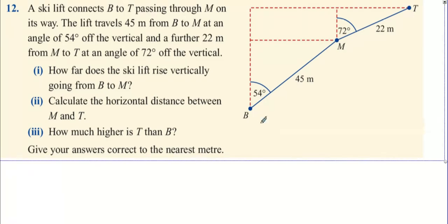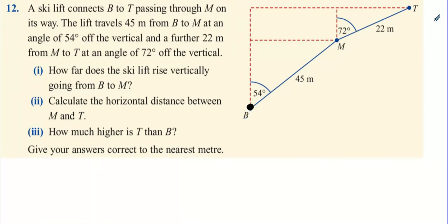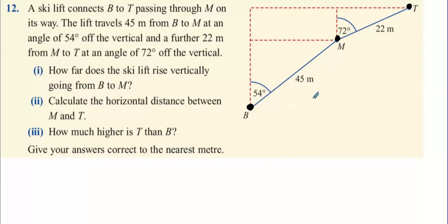Next, B to T. So this is B here, T all the way up here, and it passes through M on the way. The lift travels 45 meters from B to M at an angle of 54 degrees to the vertical, and a further 22 meters from M to T at an angle of 72 degrees to the vertical. How far does the ski lift rise vertically from B to M?